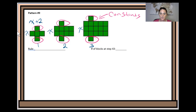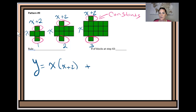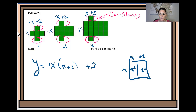So the width is x plus 2. To write the rule: y equals x (the height) times (x + 2) (the width), and then we also have to add our constant — those two extra blocks at the end. Using the area model to distribute: x², 2x — so y equals x² plus 2x plus 2. And again, we can substitute step 43 by replacing every x with 43 in either the factored or the standard form.